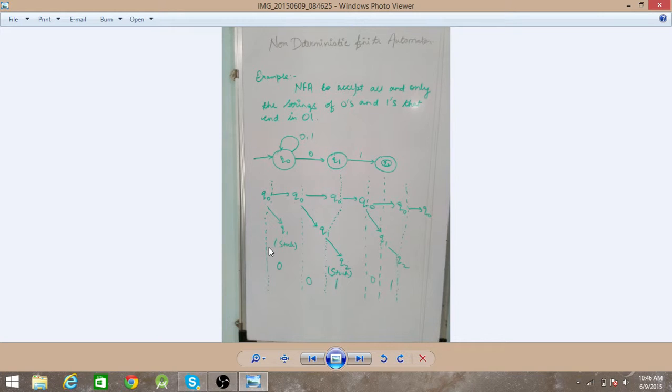Let's look at the next example. So NFA to accept all and only the strings of 0s and 1s that ends in 0, 1. So we have a substring, the string which ends with 0, 1. Now look at the state.